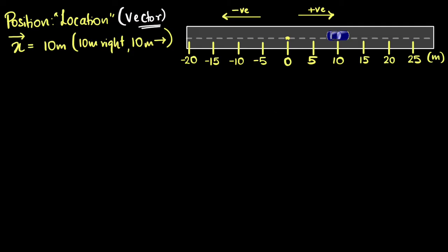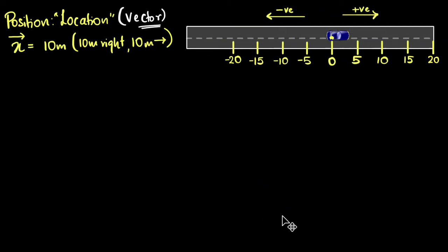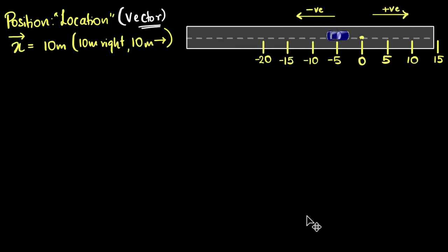What's important about the value of position is that if we had chosen a completely different reference point, the position of that car would change even though the car hasn't moved — its new position would be minus five meters. That's because the reference point changed. So the position value depends on where you choose your reference point. Another way of saying this is that position depends on the reference frame, so it's always important to know where your reference point is and which direction you've chosen as positive and negative.